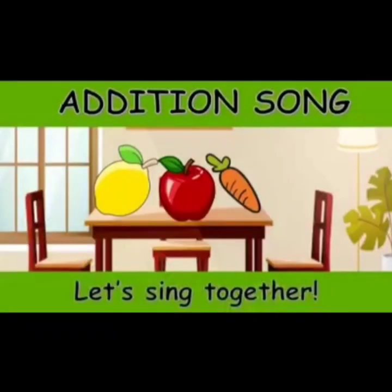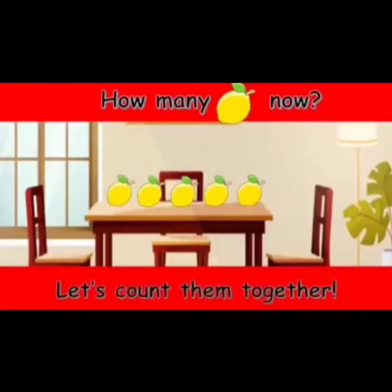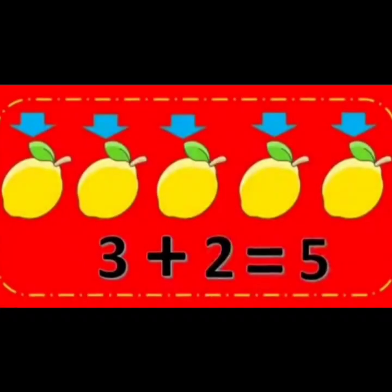Let's see our addition song together. There are three lemons on the table, then we add up two more. How many lemons now? Let's count them together. There were three lemons on the table, then we added two. How many total lemons now? Five. Now there are five total lemons.